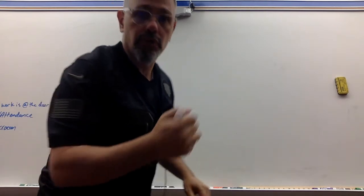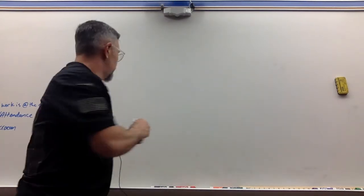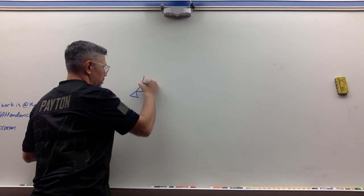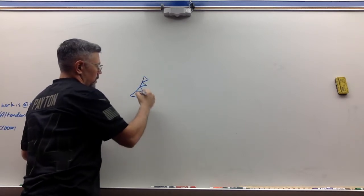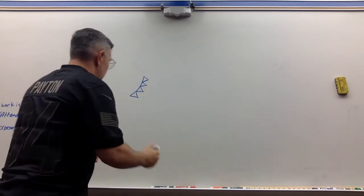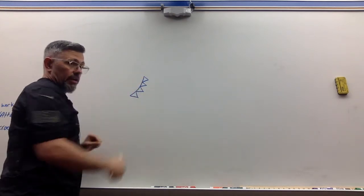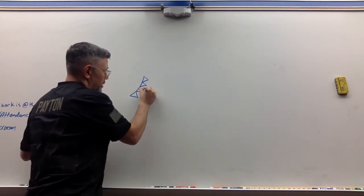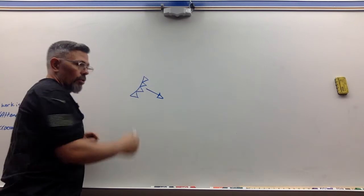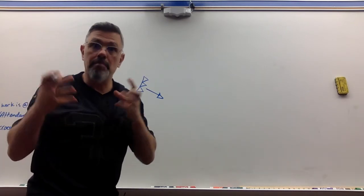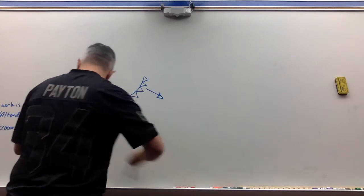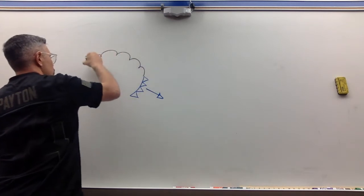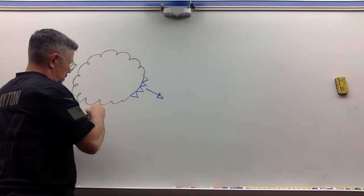We're going to start with cold front. Remember that a cold front — if you were taking a colored test, it would be blue. But it's the triangles, the alligator teeth, whatever you want to call them. Whatever direction they're facing is the direction it's going. This cold front is moving this direction. Remember, the word front means the leading edge of the big air mass, so you have to imagine that what you see here has a huge air mass behind it.